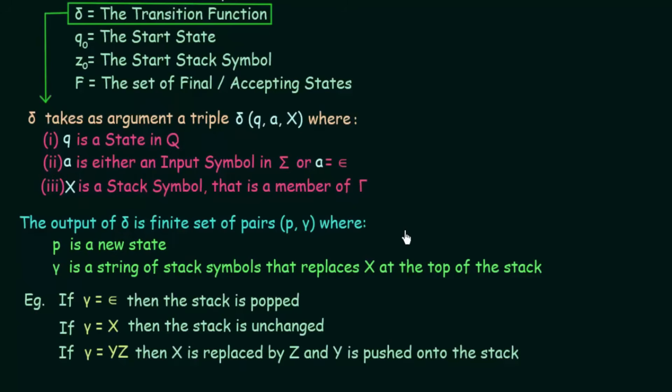That is how the transition function works, and those are the 7 tuples used to denote a push down automata. This was the formal definition of push down automata. From the next lecture we will be taking examples which will make it more clear. Thank you for watching and see you in the next one.